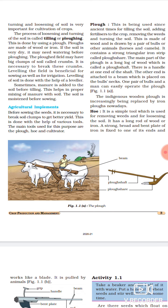Starting with plow - this is being used since ancient times for tilling the soil. Tilling matlab soil ko turn karna, taaki woh soil loose ho jaye, aur usmein jitne bhi nutrients hai, woh upar aa jaye, aur roots penetrate ho jaye soil ke andar tak. Toh sabse pehle plow jo hota hai, woh hum ancient time, matlab bahut pehle se use mein liya raha hai, soil ko turn karne ke liye.